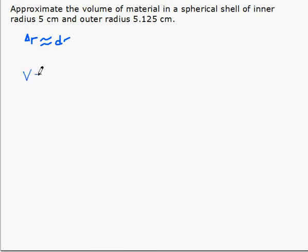So the volume of the sphere is 4 thirds pi r cubed, which means the differential of v is equal to 4 pi r squared times dr.